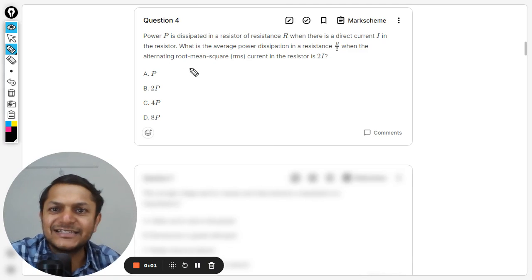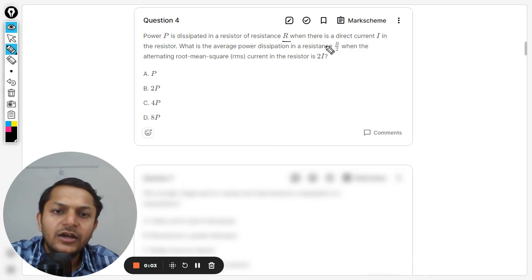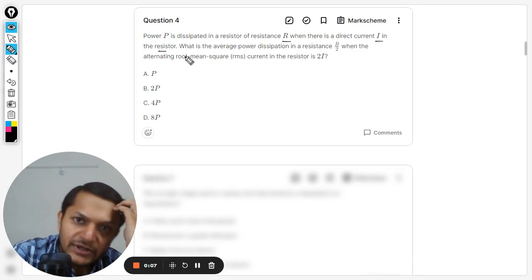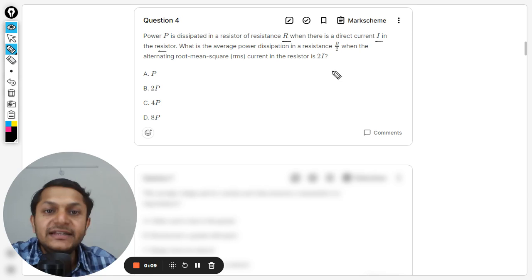In this question, power P is dissipated in a resistor R when there is a direct current I in the resistor. This is DC current, to be noted. What is the average power dissipation in a resistor R by 2 when the alternating root mean square value for the current is 2I?